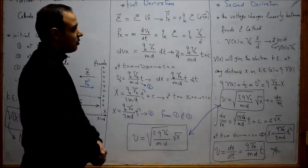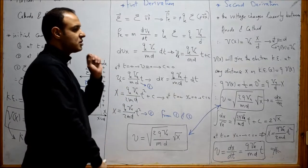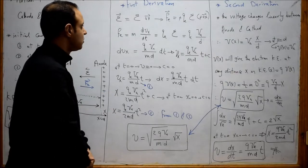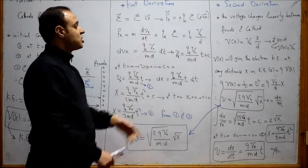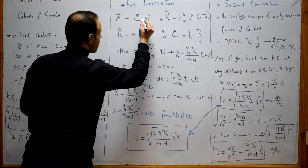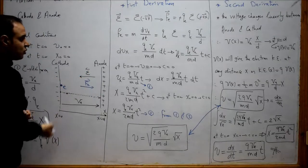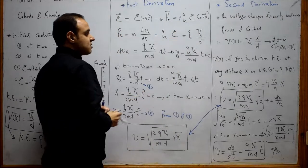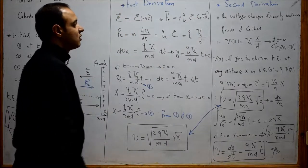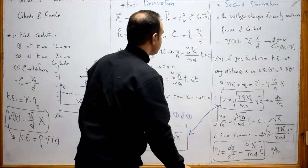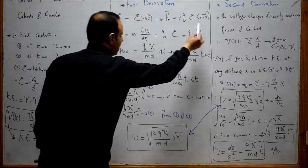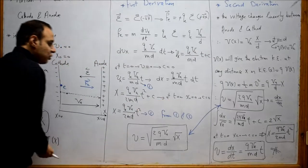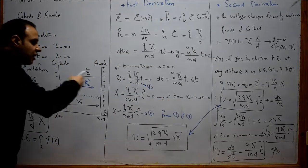This is the first derivation of the equation of motion of the electron, based on the concept that the electric field between the two electrodes exerts a force on the electron. This electric field is equal to ξ in the direction of minus x, from positive to negative. This exerts an electric force equal to the charge, minus Q, multiplied by the electric field ξ in the direction of minus x. This force is in the direction of x, opposite to the electric field, pushing the electron in the direction of x and creating acceleration in the x direction.